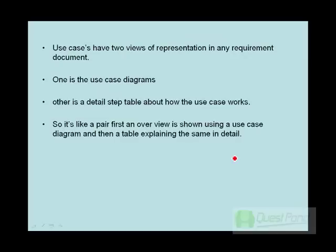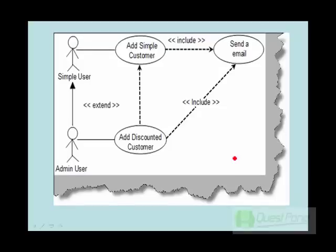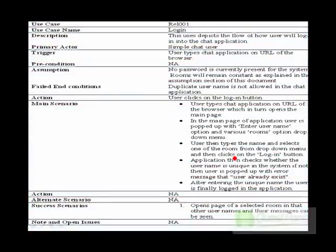A use case can have two views of presentation, and it is very important to have both in a requirement document. One is the use case diagram, which shows the higher-level view — for example, a diagram showing a simple user and an admin user, where the simple user can add a simple customer, the admin user can add a discounted customer, and when a customer is added an email is sent. This gives the overall picture of actors and use cases. The detail view is provided by use case tables.